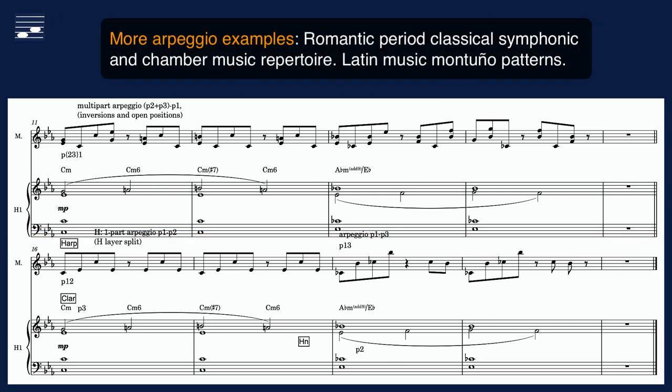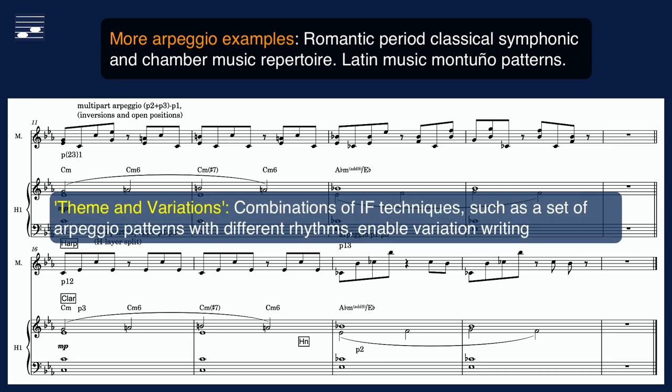The classical music repertoire is full of arpeggio instrumental form examples. You may also study montuño patterns in Latin music. Selecting a set of arpeggios or other instrumental forms creates source material for writing theme and variation compositions — great for modifying and varying a full music main theme, or changing the mood in game music depending on player interaction.